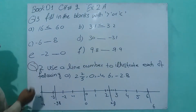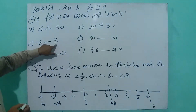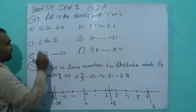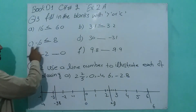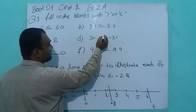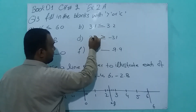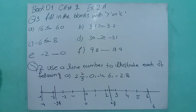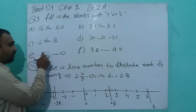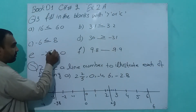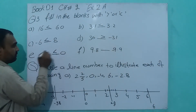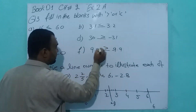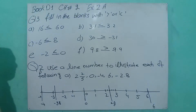Similarly, this is negative and this is positive. It means 8 is greater than minus 6. And 30 is greater than minus 31. Minus 2 is small. 9.8 and minus 9.9 — 9.8 is greater because this is positive and this is negative.